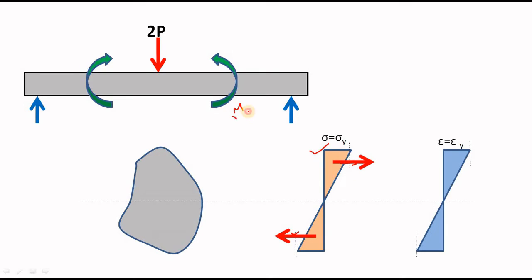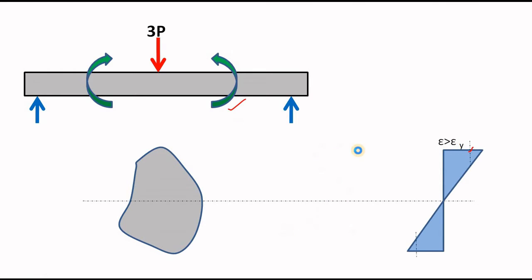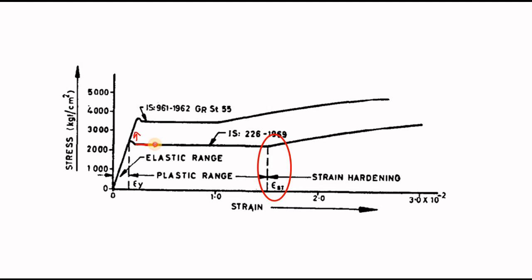Now if more moment is applied, you have to increase the magnitude of this force. The force is nothing but the stress-block area multiplied by the cross-sectional area. Your cross-sectional area is fixed, so you have to increase the area of the stress block. Steel is a plastic material, so it can redistribute stress. When the farthest fiber has crossed the yield strain, the stress should also increase, but after the yield point there is only increment in strain — there is no increment in stress.